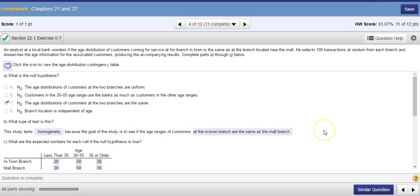Let's look at the questions. What is the null hypothesis? The null hypothesis will always be the distributions are the same for the two groups you are comparing. So we'll say the age distribution of customers at the two branches are the same. Then your alternative will be they are not the same. So it's easy once you set up the null hypothesis.